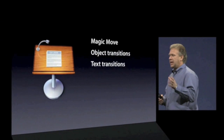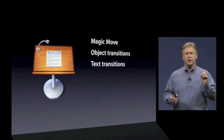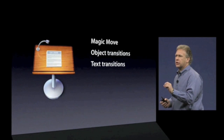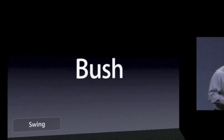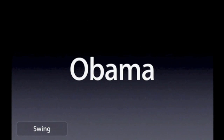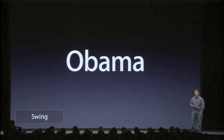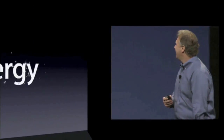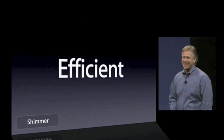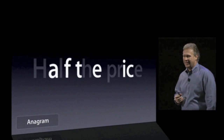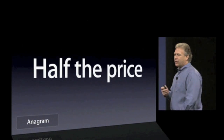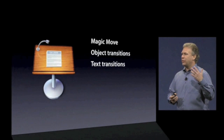And this last one — text transitions — are really great because doing a transition between text objects can be beautiful and really powerful. The first example is called a swing transition. Next, a shimmer energy. And here, this is called an anagram — if you don't know what an anagram is, you will by watching this transition. So, great text transitions in addition to magic moves and object transitions.